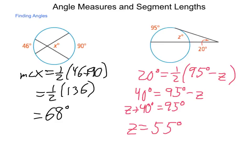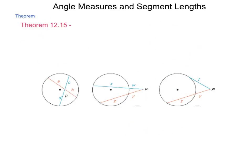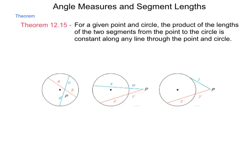So, what else can we do? Well, we can use this to find line segments also. So let's take a look at the theorem that comes along with that one. Theorem 12.15 states, for any given point and circle, the product of the lengths of the two segments from the point to the circle is constant along any line through the point and circle.